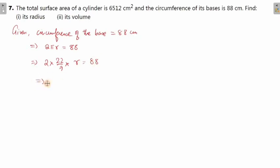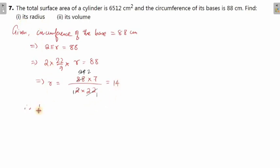From here, r is equal to 88 × 7 in the numerator and 2 × 22 in the denominator. Doing the cancellation: 2 into 22 is 44, and 88 divided by 44 is 2. So 2 × 7 gives radius equal to 14. Therefore the radius turns out to be 14 centimeter — that is our first answer.